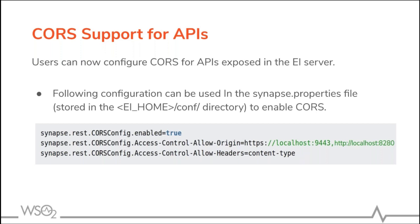To talk about CORS support for APIs, I will hand over the presentation to Samir. CORS support is important when a web application executes a cross-origin HTTP request and it requests a resource that has a different origin — like a different domain, protocol, or port — from its own origin. Now you can apply CORS configurations to the APIs exposed in the EI server. You can configure them in the synapse.properties file in the repository conf directory in the EI server. As shown in the example, you can configure the allowed CORS origins in the access-control-allow-origin property in the synapse.properties file.